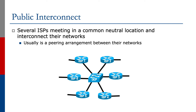A public interconnect is where several network operators meet in a common neutral location and interconnect their networks. Usually this is a peering arrangement between their networks. The diagram shows a typical public interconnect where there's an exchange point with its Ethernet switch connecting the six ISPs shown.